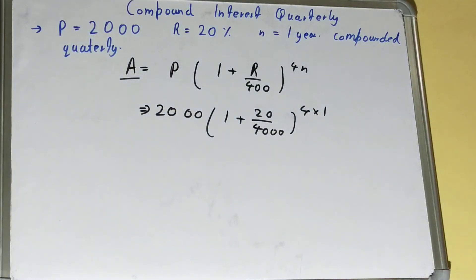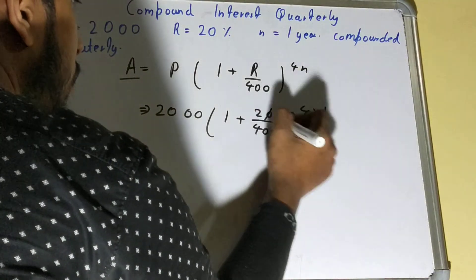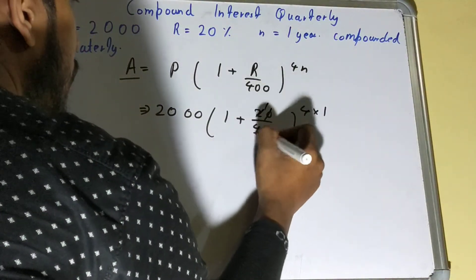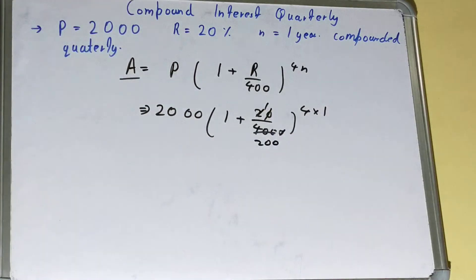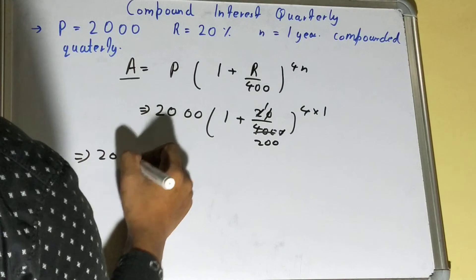Try to cancel out if something cancels. So it can be cancelled once. It will be 200, and further on 2000.